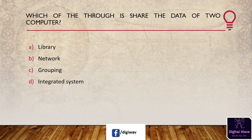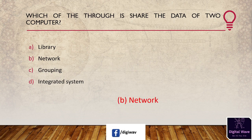Next question: which of the following is used to share data between two computers? Options are: library, network, grouping, and integrated system. The answer is network — there are many ways to share data between two computers, but a network connection is established before data sharing.